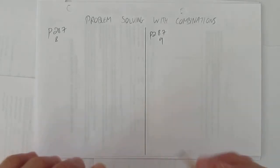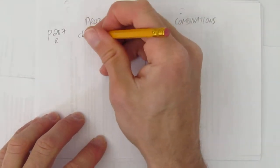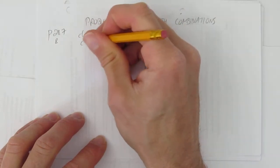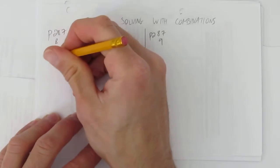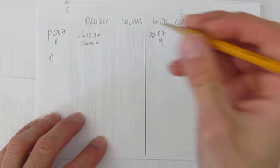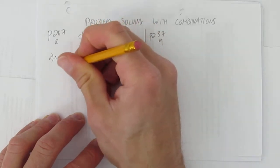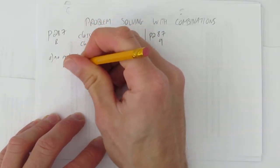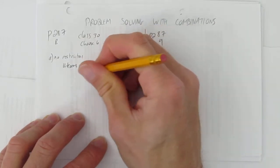First, number 8 says there's a team of 6 students to be selected from a class of 30. So I have a class of 30 and I'm going to choose 6, but it has different parts. Part A says how many different teams. In this case there's no restrictions, so the number of teams is just 30 people, choose 6 of them.